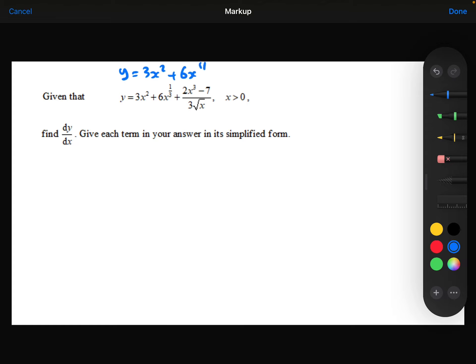Leave the first two fractions as they are. And I'm going to split this fraction into 2x cubed over 3 root x minus 7 over 3 root x. So I've just split this fraction into two separate fractions.